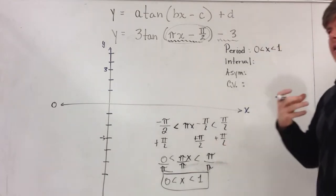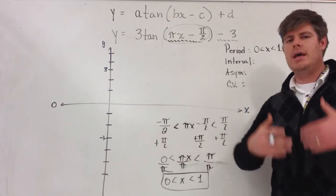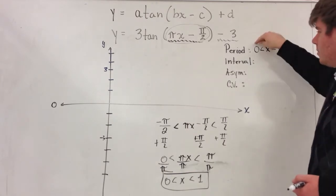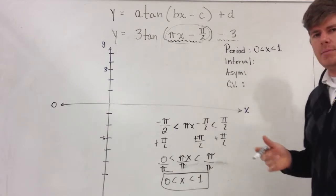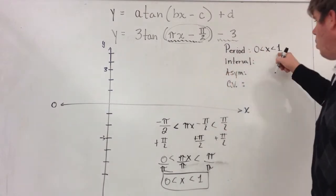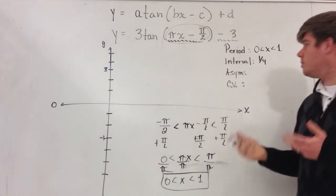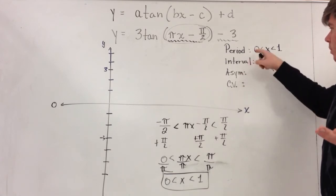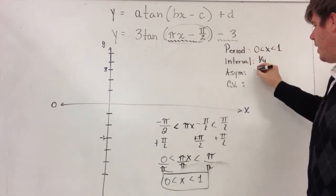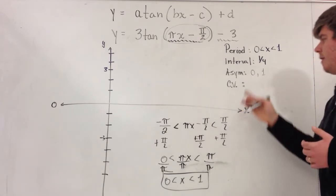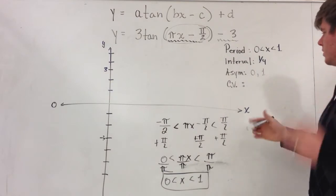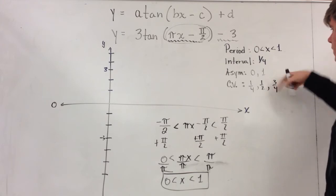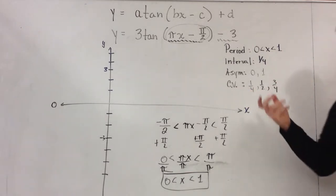My period goes from 0 to 1. For interval steps, I take the total distance of the period — the end point minus the beginning point — so 1 minus 0 is 1, and divide by 4 to get each critical step. So 1 divided by 4 is one-fourth; each interval step is one-fourth. My asymptotes are at x = 0 and x = 1. My critical values are at one-fourth, one-half, and three-fourths — these will help me plot my points on the graph.